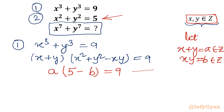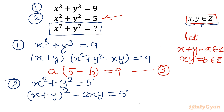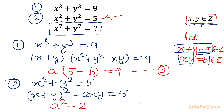Now I will write equation 2, which is x² + y² = 5. Using the identity (x + y)² - 2xy = x² + y², we substitute a for x + y and b for xy. This gives us equation 4: a² - 2b = 5.